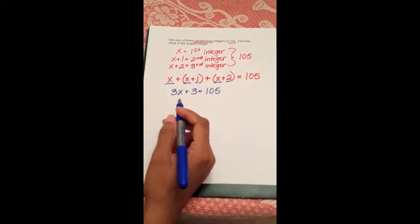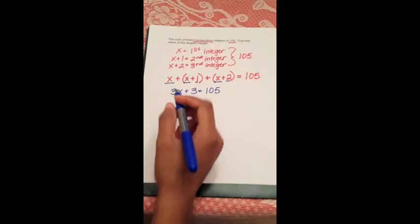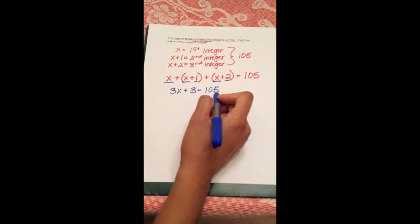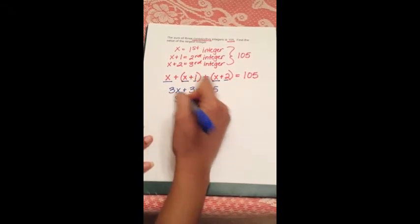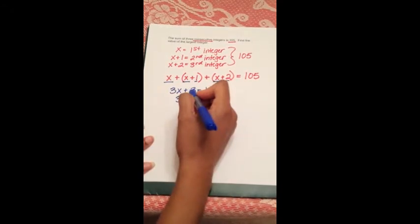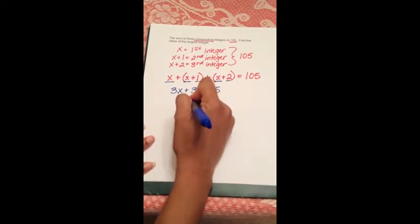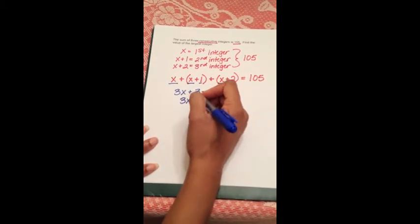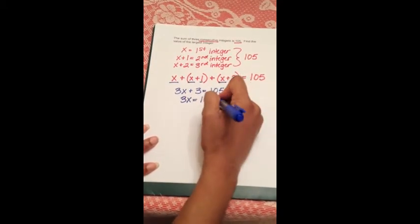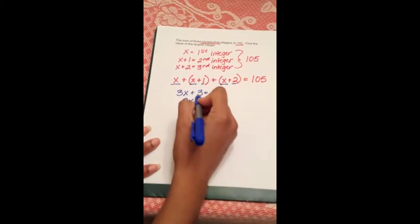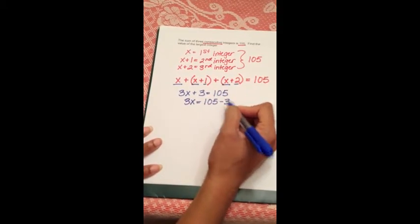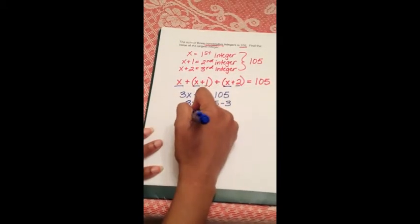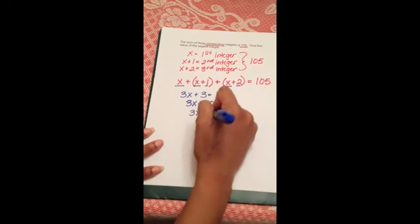Now we're going to solve the equation. We want to combine like terms once again, which means we want to isolate the 3x by itself. We're going to subtract 3 from this side so that the 3s cancel out. But whatever we do on the left-hand side, we must also do on the right-hand side. So if I subtracted 3 from the left, I must do the same thing on the right. So 105 minus 3 gives us 102.